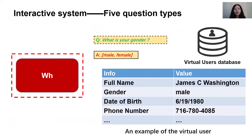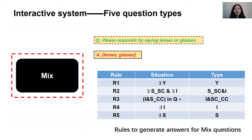WH questions are questions with a WH-word, such as what, where, and so on. Here we focus on WH questions related to users' private information. We build a virtual user database to answer them. Here is an example of a virtual user. Mixed questions usually contain more than one type among these four question types. We build rules manually and answer them according to the rules in the table. For example, in rule 3, if selection CC and instruction questions appear in one sentence, we deal with both types and extract answers such as 'lessons' and 'classes.'